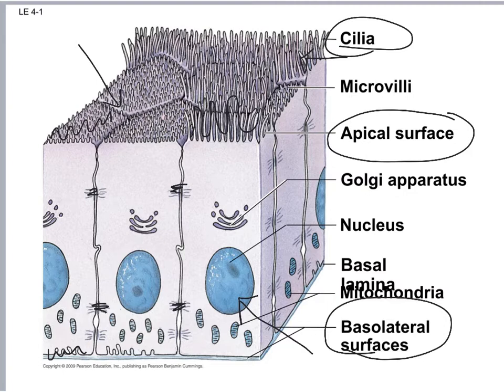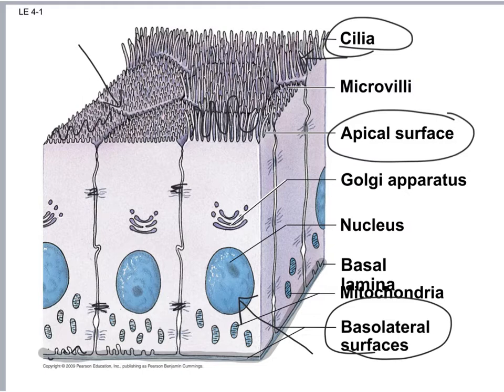Because the apical surface is open to the inside of the passageway, the basolateral surface is attached to the rest of the body via the basement membrane. You can see that layer right across the bottom. The basement membrane connects the epithelial tissue to the rest of your body.